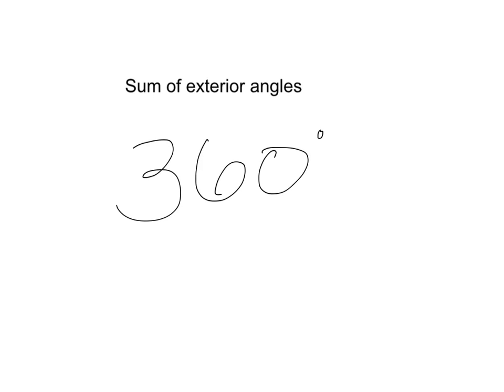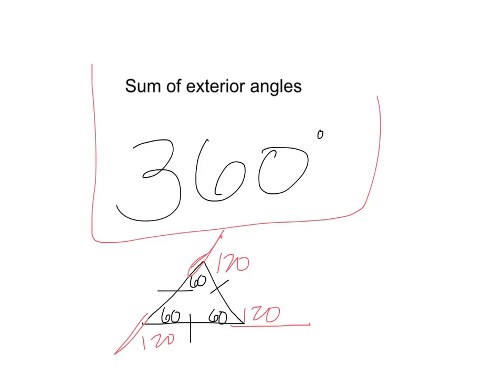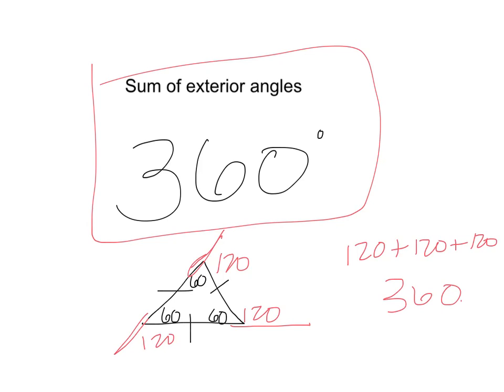It doesn't matter what shape it is. For example, if I took a regular equilateral triangle, we know that all those angles are 60 degrees. But the exterior angles, this one would be 120, this one would be 120, this one would be 120. So the sum of the exterior angles is always 360. If I did 120 plus 120 plus 120, that equals 360. That happens for every regular polygon. The sum of the exterior angles is always equal to 360.